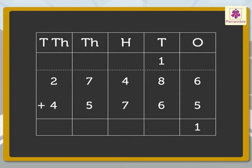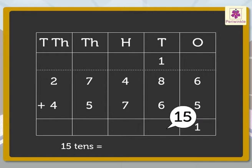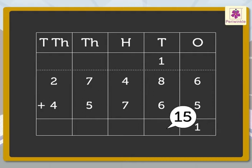Now add the numbers in the tens column: 1, 8 and 6. We get the number 15. Regroup the 15 tens to 1 hundred and 5 tens. Carry the 1 hundred to the hundreds column and write 5 in the tens column.